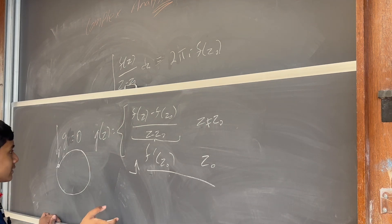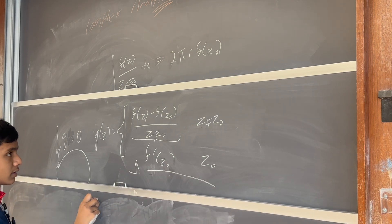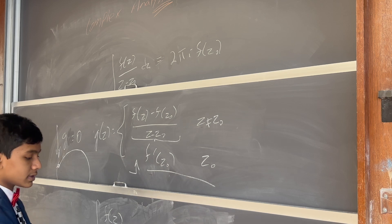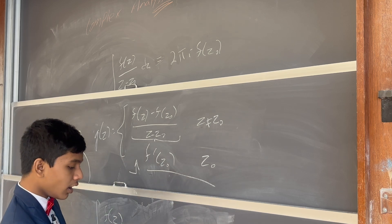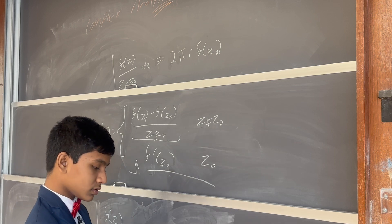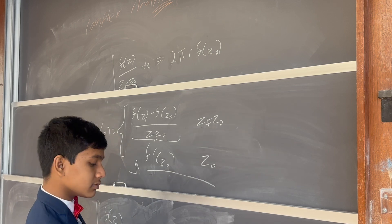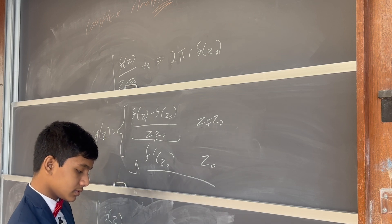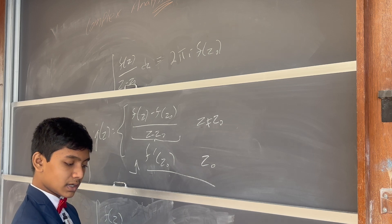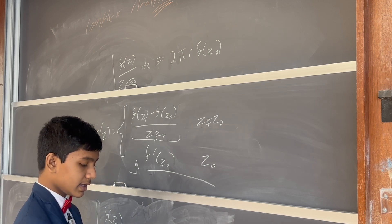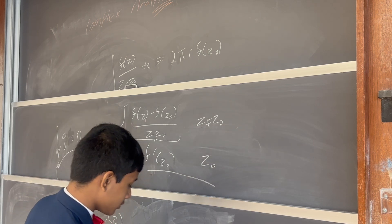Then you get to know that the integral of f(z) divided by (z minus z-naught) dz is equal to the integral of f(z-naught) over (z minus z-naught) dz. But of course, with this one, you can pull out the f(z-naught), and the rest just becomes ln of (z minus z-naught), which over any simple closed contour is just going to become 2πi.